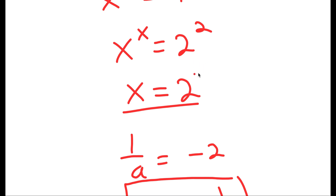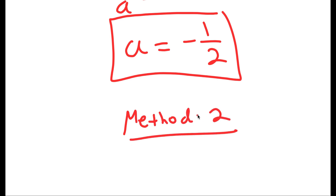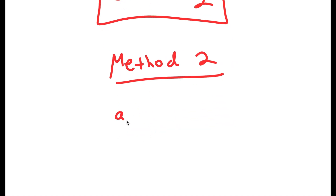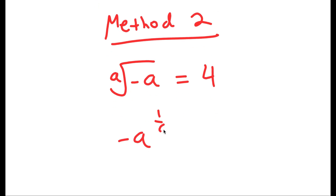I actually have one more solution method for this equation, and for this second method I'm going to be using logarithms. Our equation was again negative a to the power of 1 over a is equal to 4.